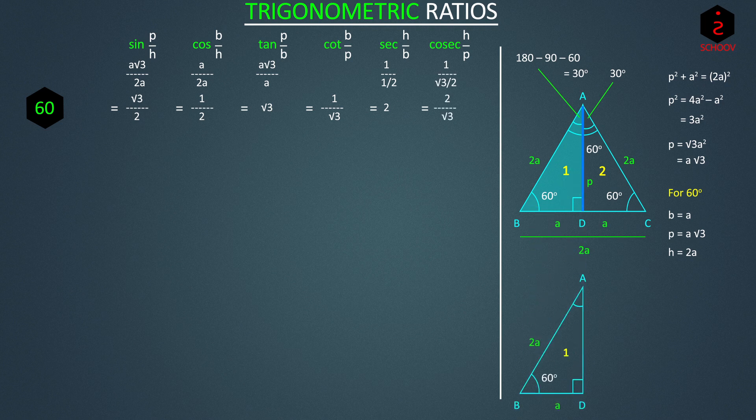In the same triangle one, we also have an angle of 30 degrees. So let's find the ratios for 30. Since the vertical side AD makes 30 degrees with the hypotenuse, it becomes base for angle 30, which is A root 3. And the horizontal side BD opposite to angle 30 becomes perpendicular, which is A, hypotenuse is 2A.